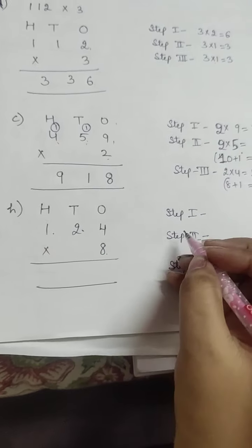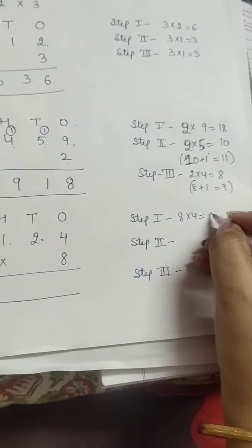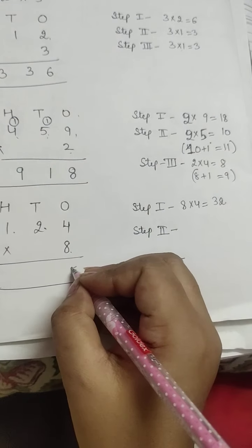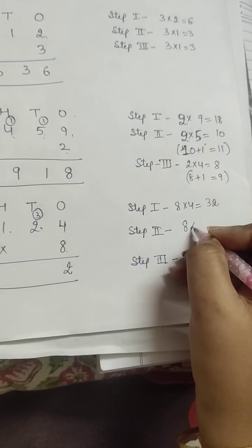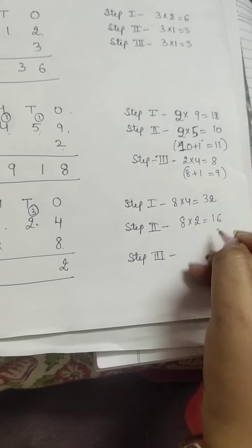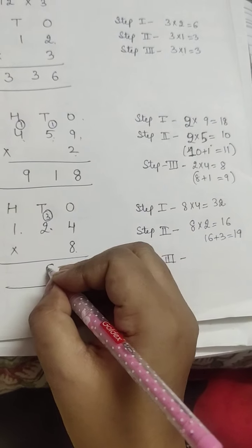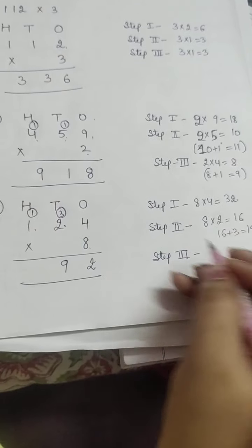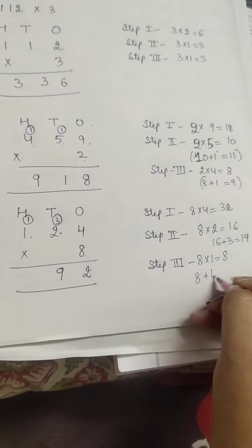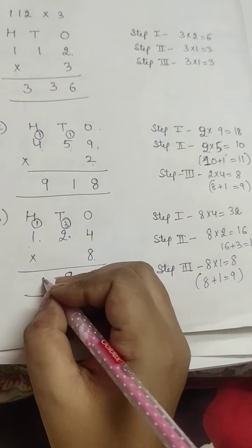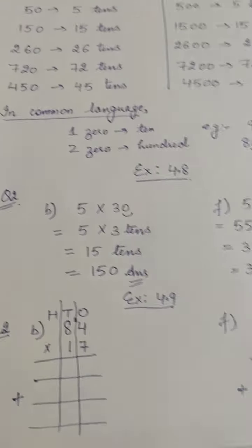Next is part H: multiply 124 with 8. Step 1: multiply 8 and 4, answer is 32. Write 2 here and carry 3. Step 2: multiply 8 and 2, that is 16. 16 plus 3 = 19. Write 9 and carry 1. Then 8×1 = 8, and 8 plus 1 = 9. So the answer is 992. Is it clear?